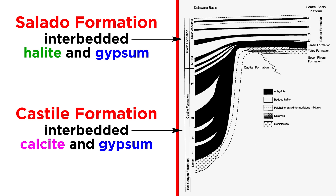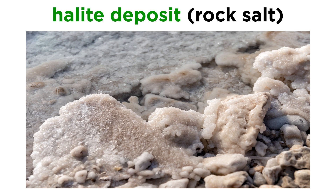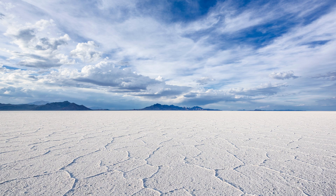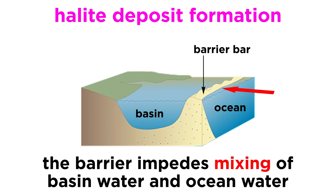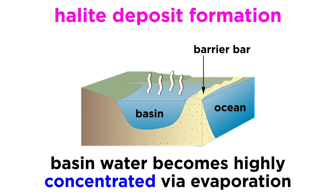Above the Castile formation is the Salado formation, which consists of interbedded halite and gypsum, indicating that the basin became more concentrated with time. Halite deposits are often called rock salt and can occur in deposits up to 2 kilometers thick in some areas. Most large halite deposits are thought to have formed from the evaporation of seawater in large restricted basins existing in arid environments. Since there are no modern analogues for the evaporation of seawater on such a large scale, geologists have proposed several models for the formation of such deposits. They all involve large coastal depressions that are separated from the ocean by a barrier of some sort, such as a barrier bar, which is just a subaerial ridge of beach sand. The barrier, or sill, impedes mixing between the basin water and ocean water, allowing the basin water to become highly concentrated via evaporation.